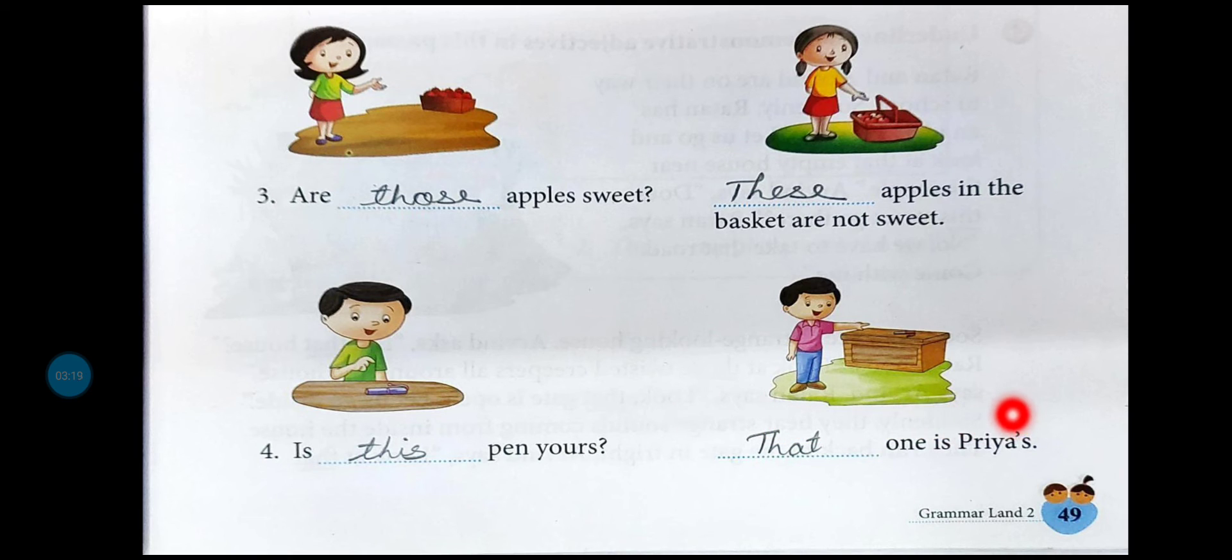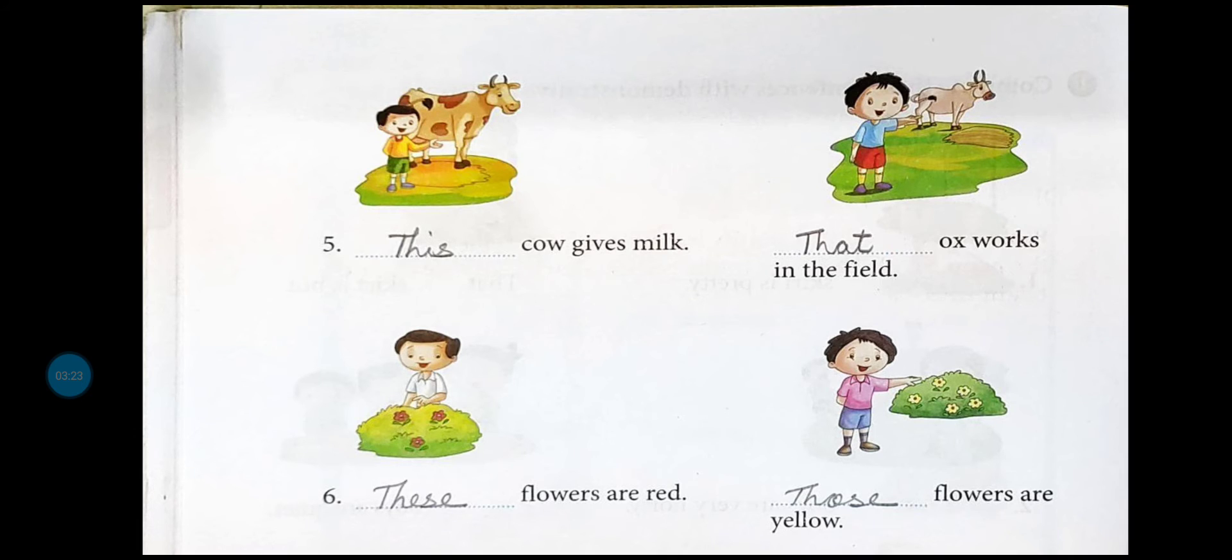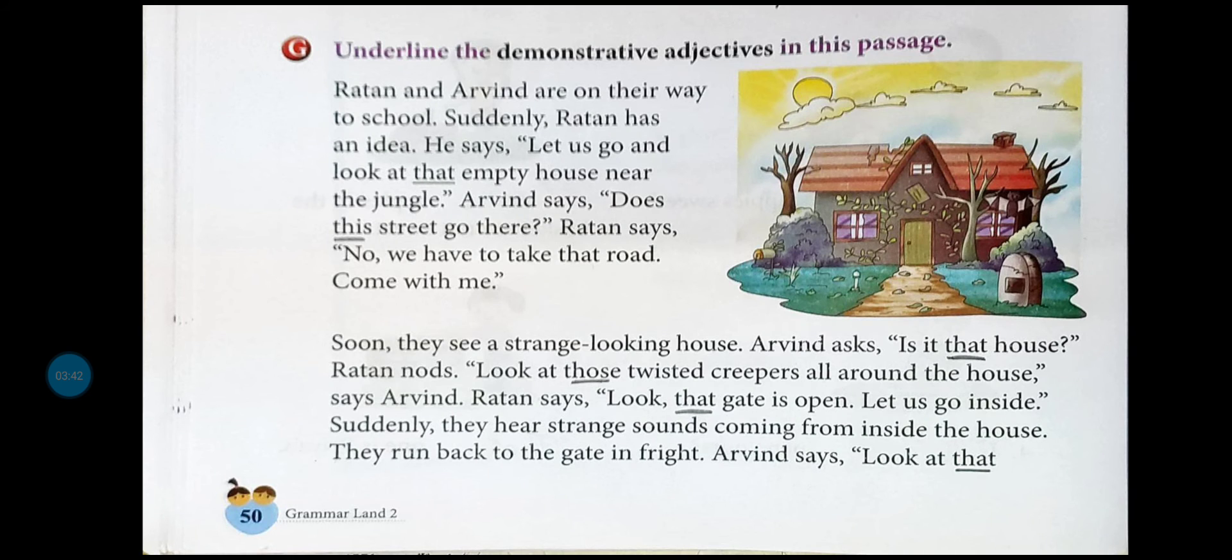This cow gives milk - singular ہے اور near ہے۔ That ox works in the field - far away ہے اور singular ہے۔ These flowers are red - plural میں ہے اور پاس میں ہی ہے۔ Those flowers are yellow - یہ زیادہ ہیں اور دور رکھے ہوئے ہیں۔